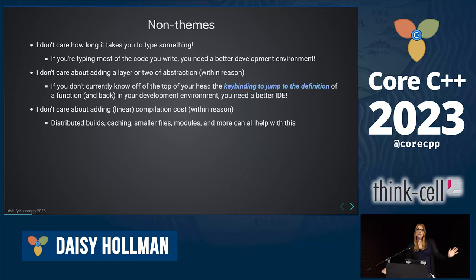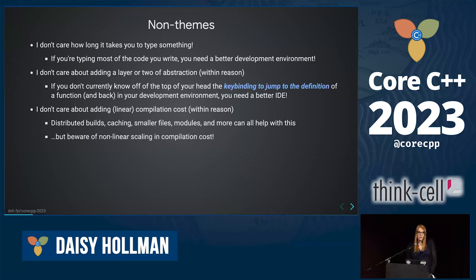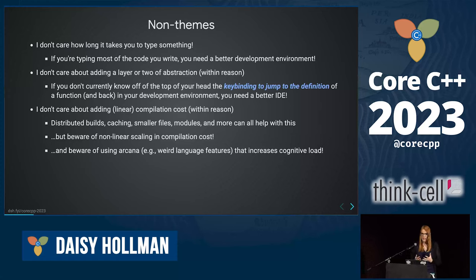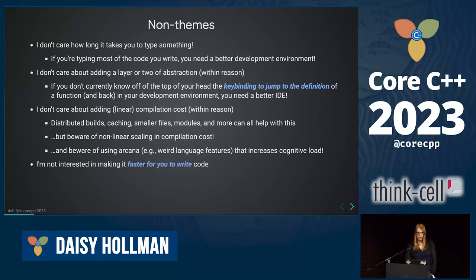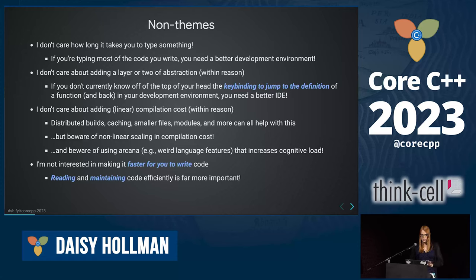If you use a template, your code is going to take longer to compile, but it's also going to take less time to read — and that's far more important. Be aware of weird language features that increase the cognitive load of your reader. If the person reading your code doesn't understand the abstraction you're using, then it's not reducing cognitive load. Maybe that means you need better education at your company or to work with junior developers to understand new things. I am much more interested in prioritizing reading and maintaining code, because those are the things that cost a lot more and are done a lot more.